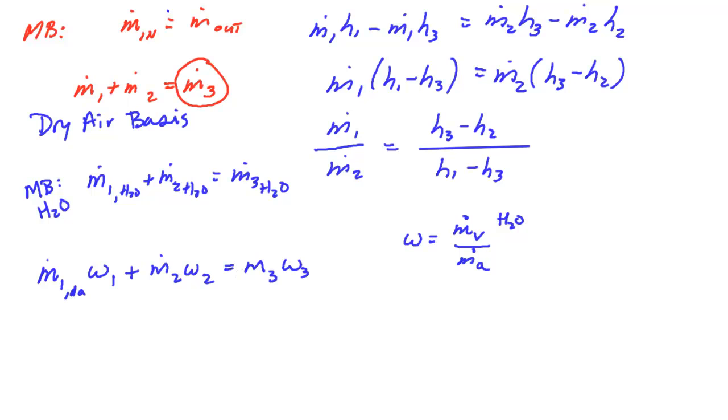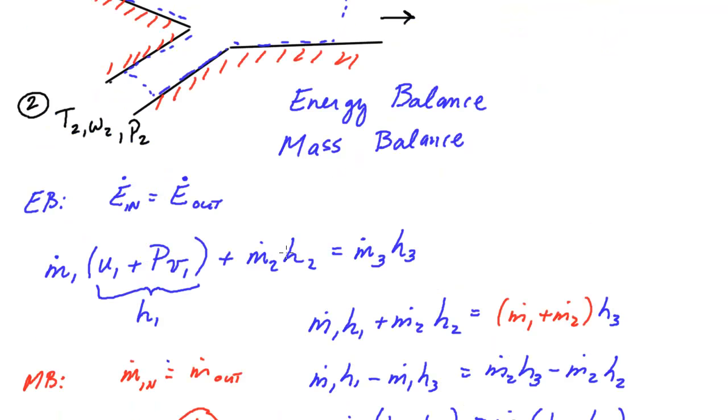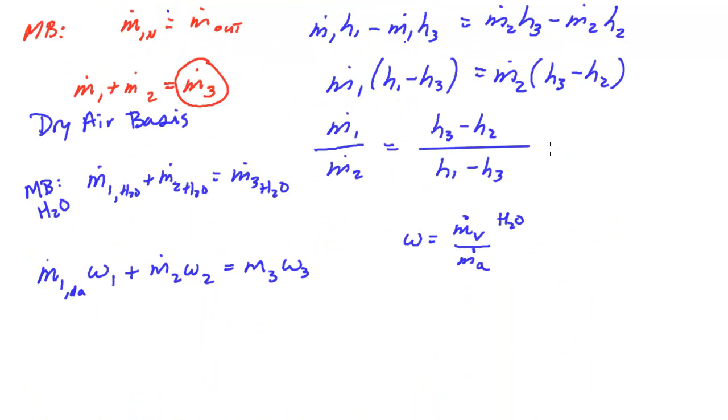So we can do the same thing. And if you notice, this form is exactly the same as this form, except the h's have been replaced by ω's. And so this same algebra would follow through. I hope this isn't too much of a logical leap for you, that you would also get this ratio with the specific humidity ratios. So this also is equivalent.